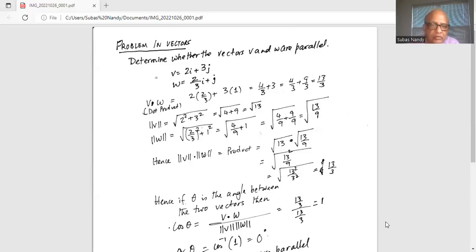Now the magnitude of the vector v is square root of 2 squared plus 3 squared, which is square root of 4 plus 9, which is square root of 13.